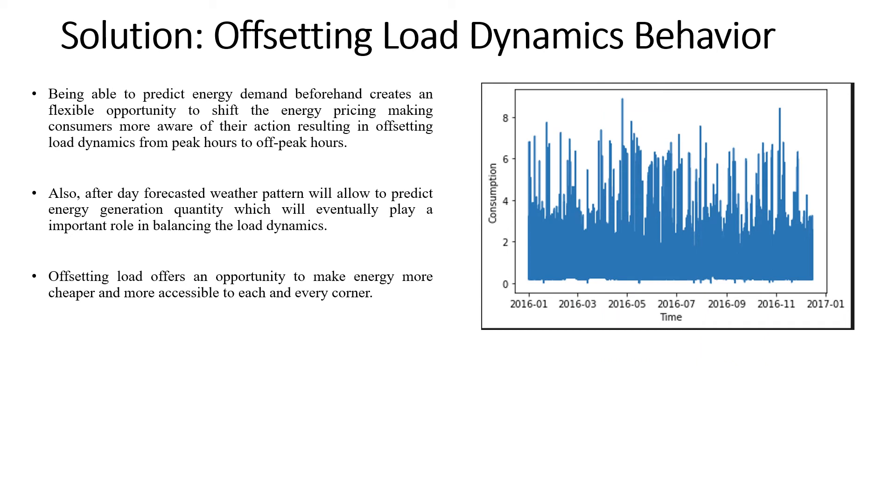So one of the solutions in order to achieve that objective is offsetting load dynamics behavior. Here is the plot of one of the data collected from the smart meter of a home in Spain. It illustrates the consumption proportion with respect to time and we can see that the highest proportion is during the late night hours of that house. So being able to predict energy demand beforehand will create a flexible opportunity to shift the energy pricing and we can share some dynamic pricing strategies which will make the consumers more aware of their action in creating unnecessary energy consumption which shall be decreased by these offsetting strategies from the peak hours to the off-peak hours.